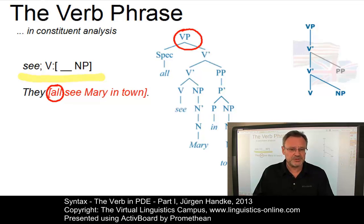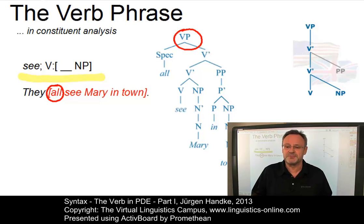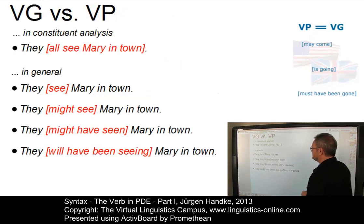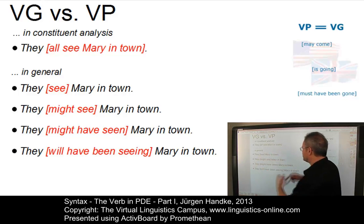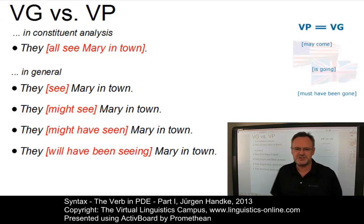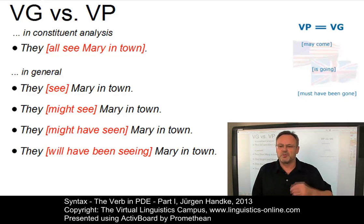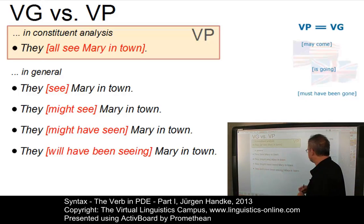So we have two interpretations of the term verb phrase: a more or less traditional one and a constituent analysis type of interpretation. And that is a problem. Perhaps it would be reasonable to draw the following distinction: in constituent analysis, 'all see Mary in town' is the verb phrase. In the traditional sense, sequences like see, might see, might have seen, or will have been seen are also referred to as the verb phrase. So what we suggest is to reserve the term verb phrase for constituent analysis.